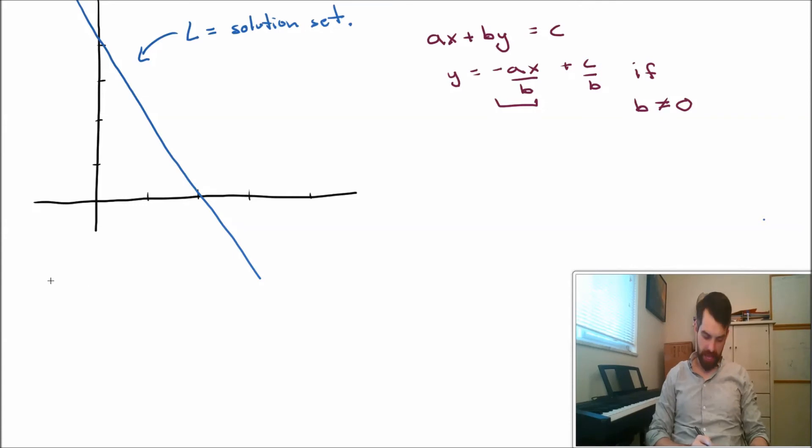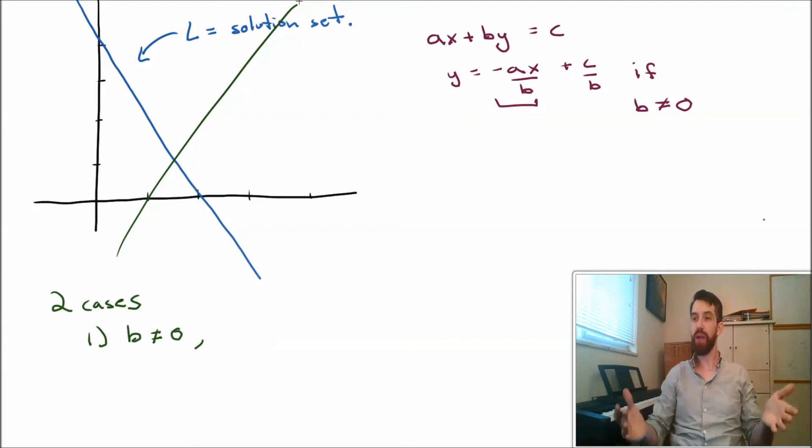So I'm going to claim that there's actually going to be two different possibilities, two different cases to investigate. The first case is this one that we've just written down where we have b not equal to 0, and we just get some line. I don't know exactly where to draw it because I haven't given a specific a, b, and c, but it's some equation of a line because there's no division by 0 problems, and therefore there's infinitely many solutions. There are infinitely many different points, all the different points that are on the line, that all solve that particular equation.